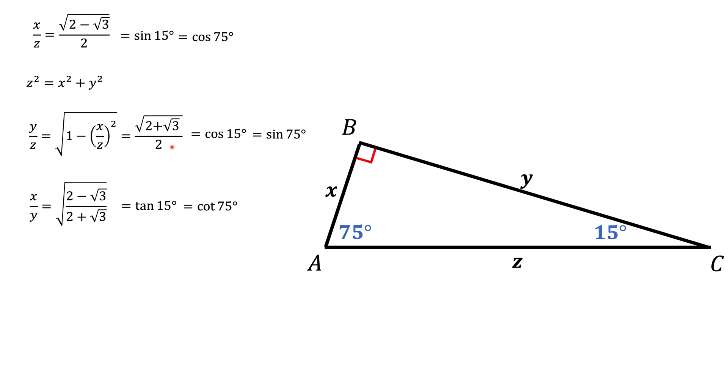The complication here is what's called nested square roots. So like here we have square root of 3 inside of another square root. First, let's take care of the ratio of x to y.